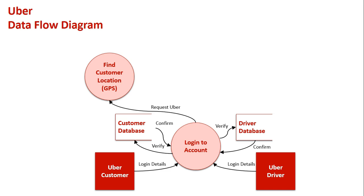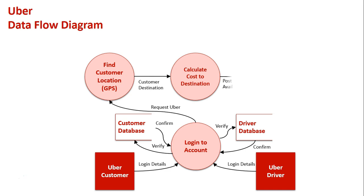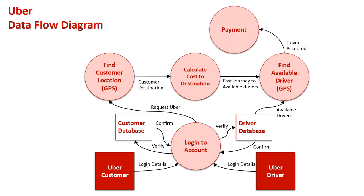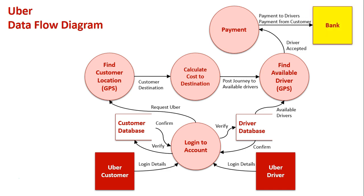Once logged in, we go through the processes of setting up the drive. First, the customer's location is retrieved using GPS technology. Once we have their location, we need their destination, and from those two inputs we calculate the estimated cost. We then post the journey to available drivers — this is done through GPS, but we also search the driver database to check if a driver works and is within the region. A driver is selected, they accept, and payment occurs: payment from the customer and payment to the driver are processed, and receipts are sent back.